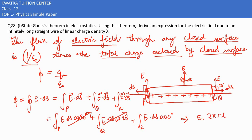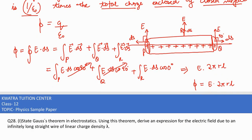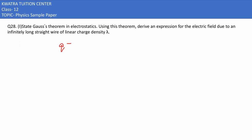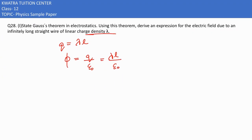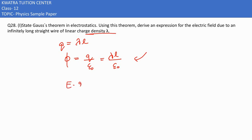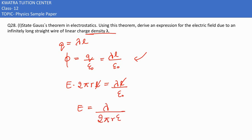Integrating over the curved surface R gives E·2πrL, and cos0° = 1. So φ = E·2πrL. The charge enclosed is Q = λL (since linear charge density is λ). From Gauss's theorem, φ = λL/ε₀. Equating both expressions: E·2πrL = λL/ε₀. Cancelling L from both sides, the electric field E = λ/(2πrε₀).